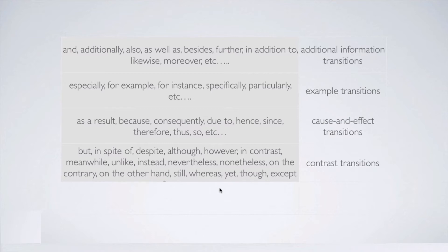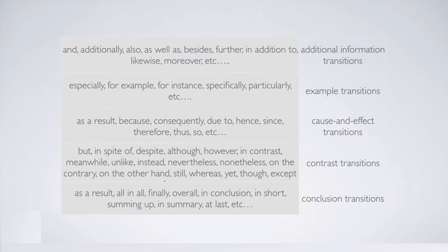The next transitions are conclusion transitions. It means they will introduce a conclusion — a summary of the information stated above. Such conclusion transitions are: as a result, all in all, finally, overall, in conclusion, in short, summing up, in summary, at last, etc. So if you see one of these conclusion transitions, it means that after it there will be information that concludes what was said above. When we see these transitions, we need to see if that is the logical place for the sentence. Now let's talk about specific sentence types that can help us understand the placement.